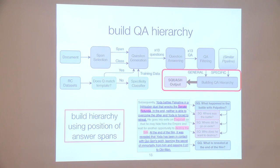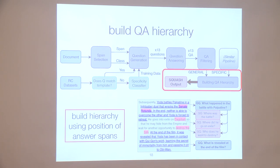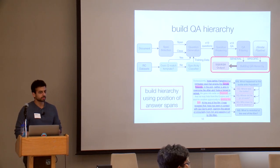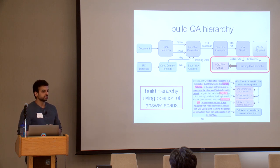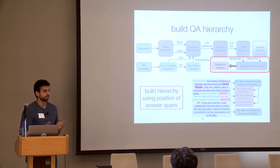The underlying datasets are Squad, QUACK, and CoQA. These probably contain some level of gender bias depending on how they sampled Wikipedia articles. For example, in the QUACK dataset we only used Wikipedia articles about people, and most Wikipedia articles about people are about men — that's how gender bias enters.